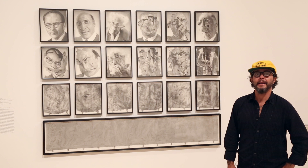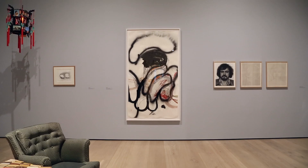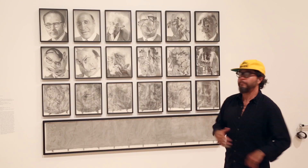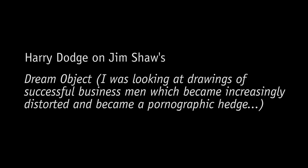Hi, I'm Harry Dodge. I have a piece in the show. My piece is called Quanta. It's a big drawing from 2013 and it's in the next room, but the piece I'm going to talk about today is Jim Shaw's big graphite piece called Dream Object.